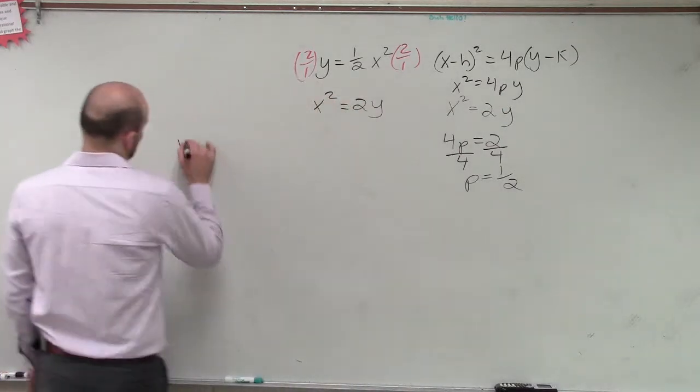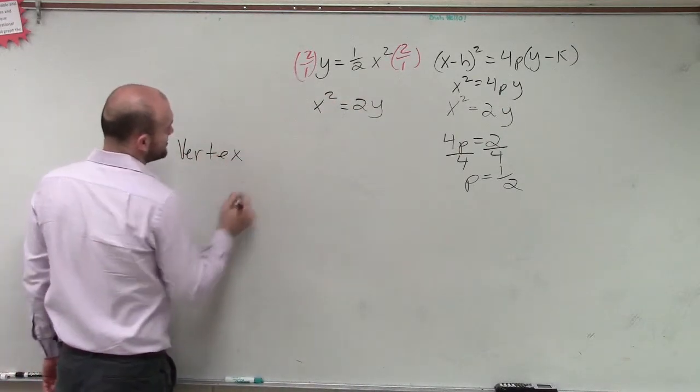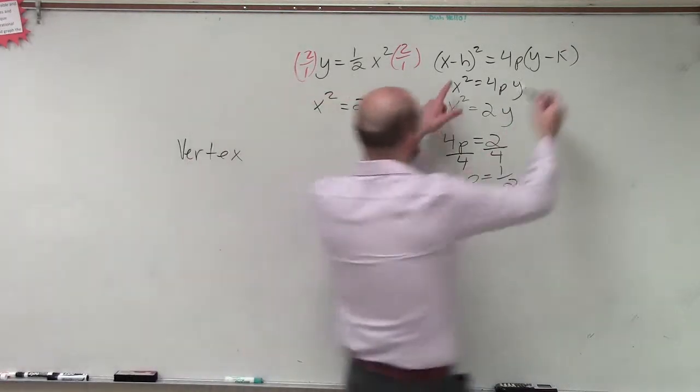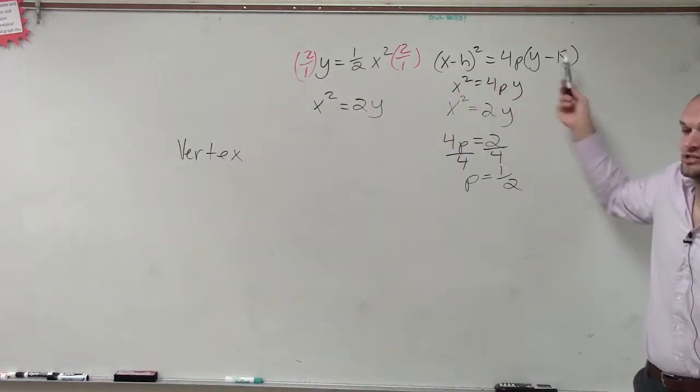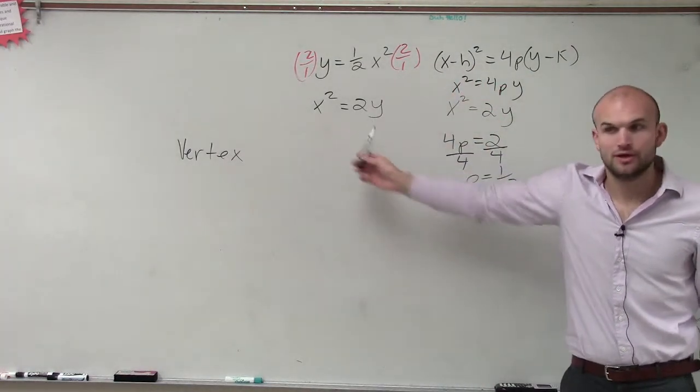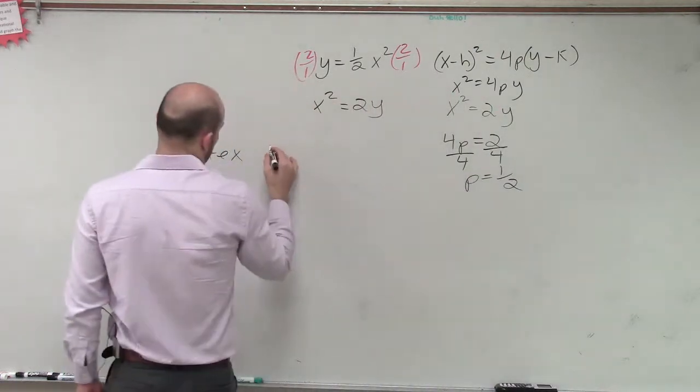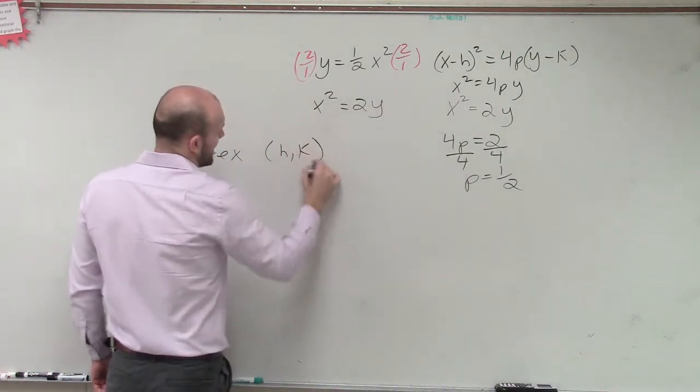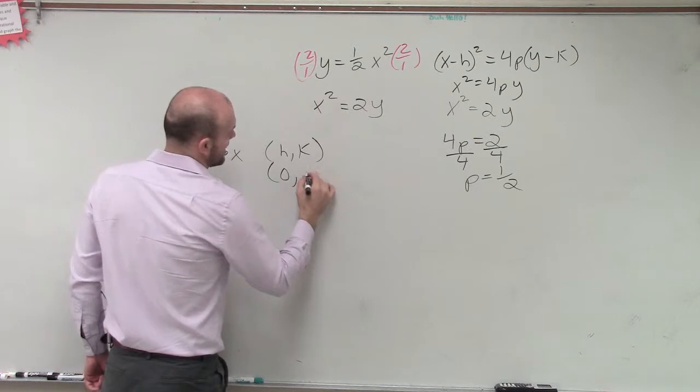So remember, let's go from our purpose, we have vertex. Remember, vertex was h, k, right? h, k. Do we have an h, k in this form? No. So our vertex, which we call h, k in this format, is 0 comma 0.